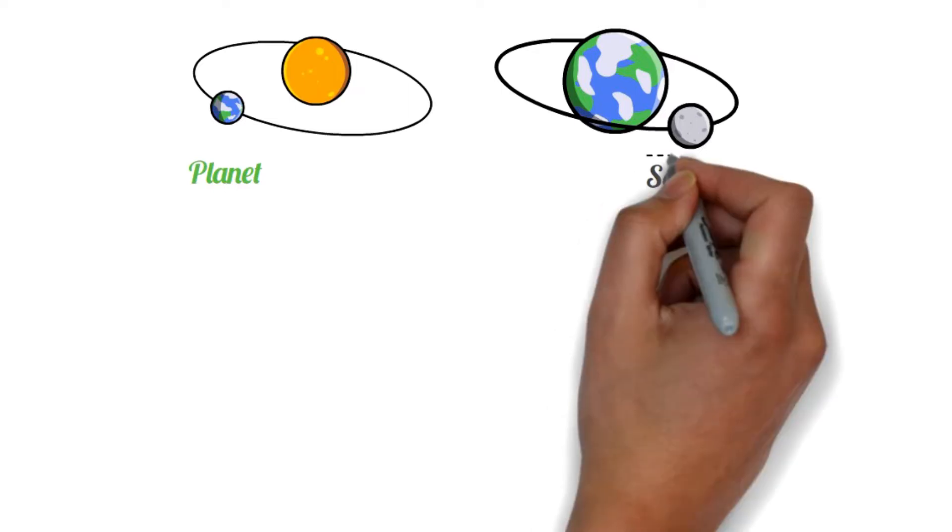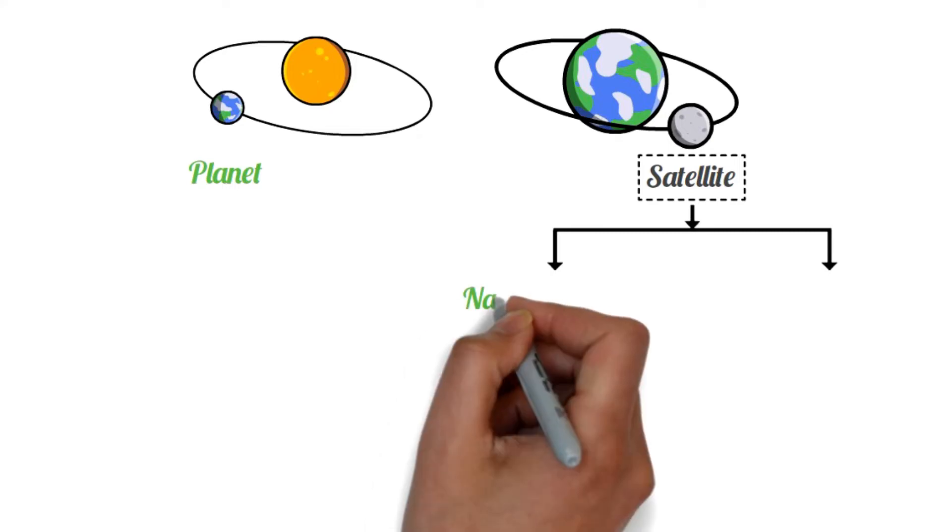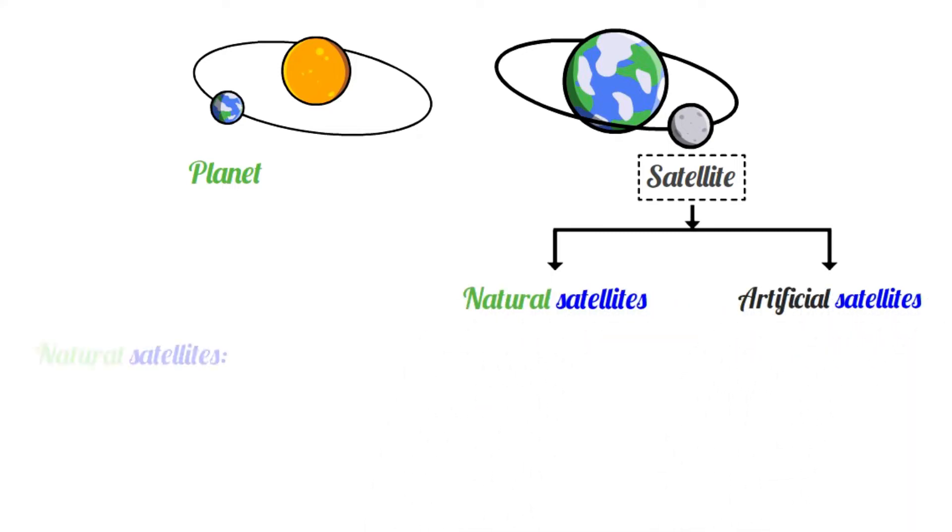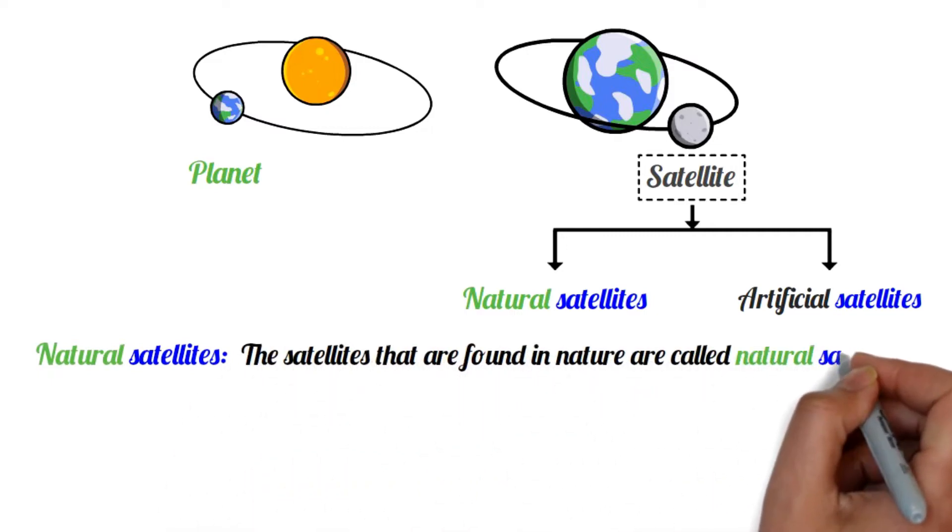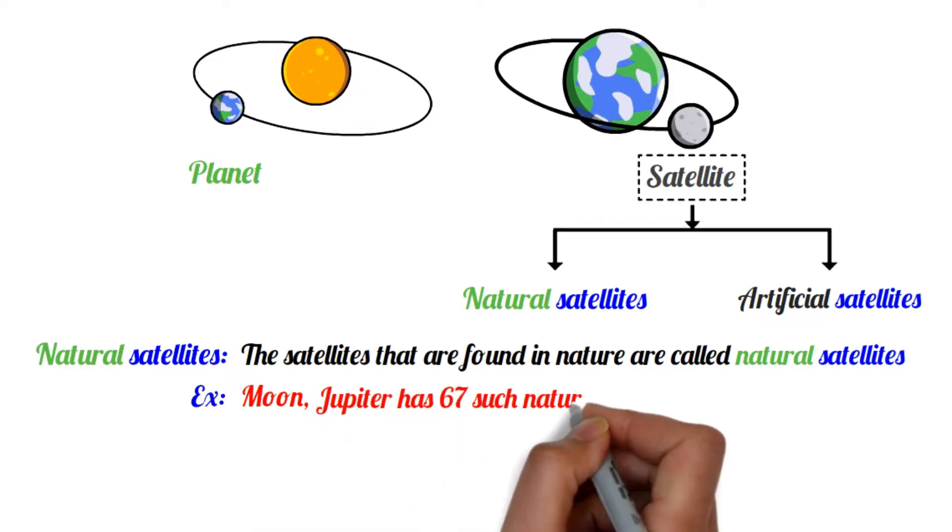When it comes to the classification of satellites, it is divided into two main categories: one is natural satellites and the other is artificial satellites. We all know that satellites found in nature are called natural satellites. For example, the moon is the only natural satellite of planet Earth. Similarly, Jupiter has 67 such natural satellites, and so on.